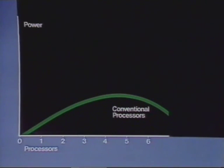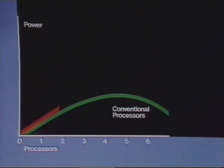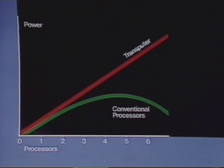The peak would typically occur with about three to five processors on a single bus. Contrast this with the red curve, which shows that the performance of a multi-transputer system actually increases linearly as more are added.